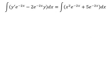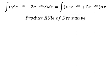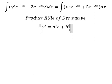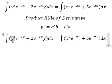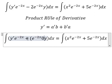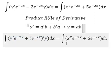Next we can use the product rule for derivatives. We have the derivative of y equals the derivative of A multiplied by B, plus the derivative of B multiplied by A. So we have the derivative of A multiplied by B, and the derivative of B multiplied by A.